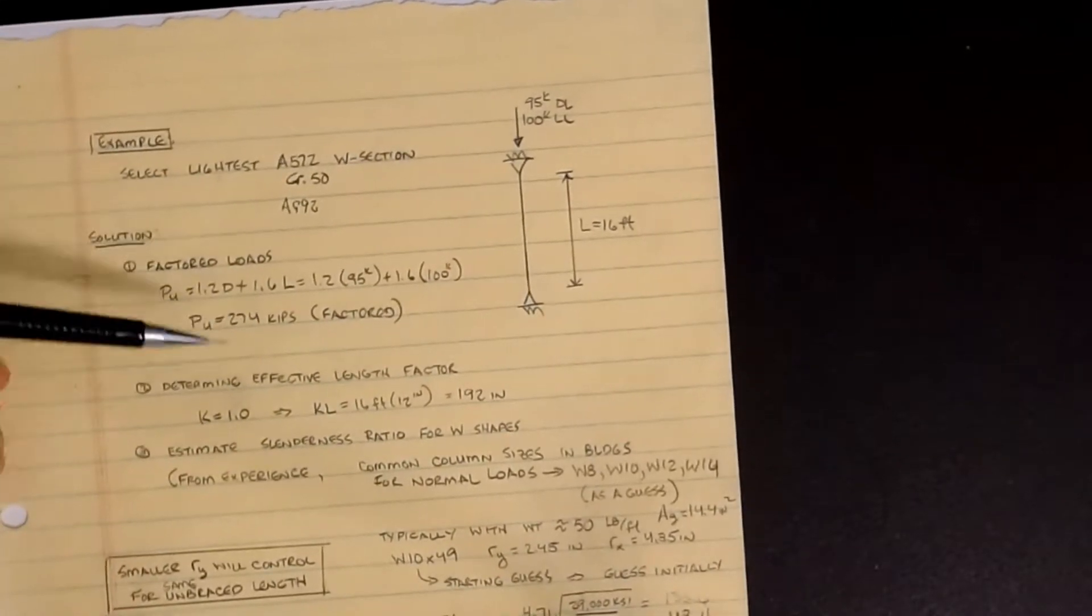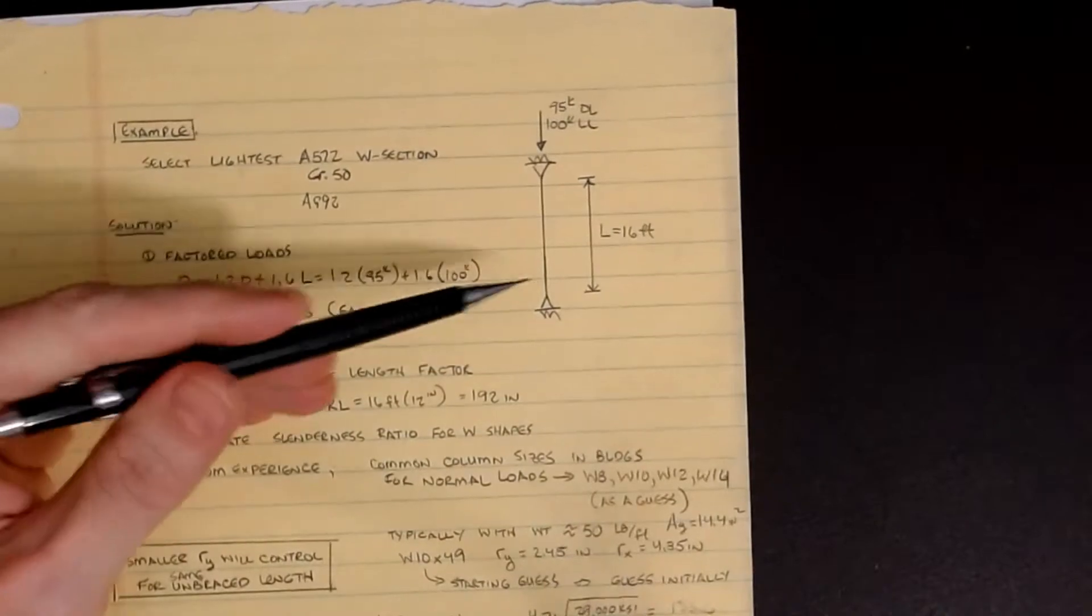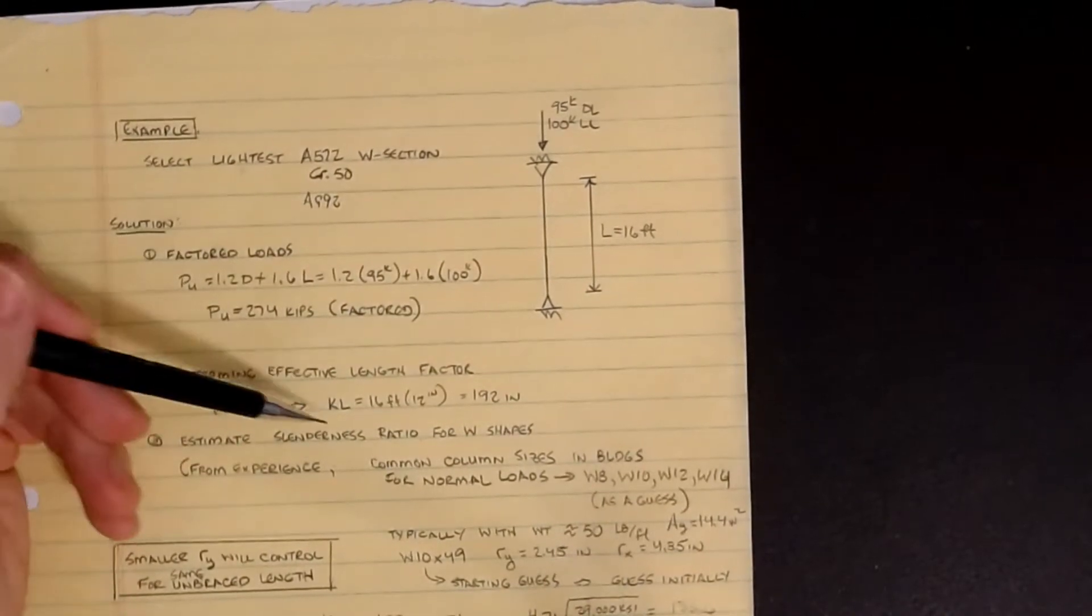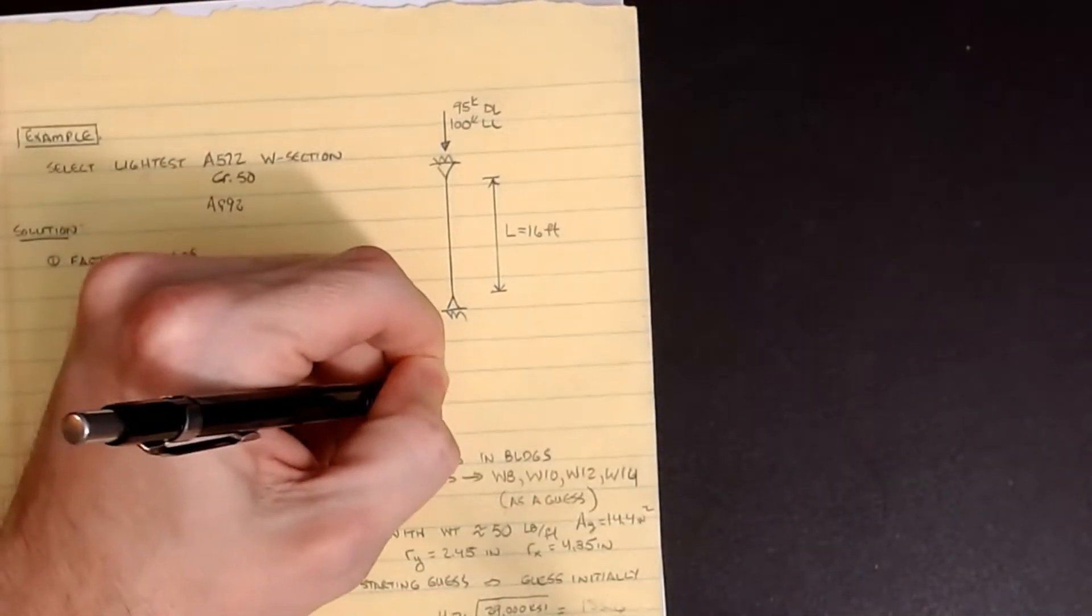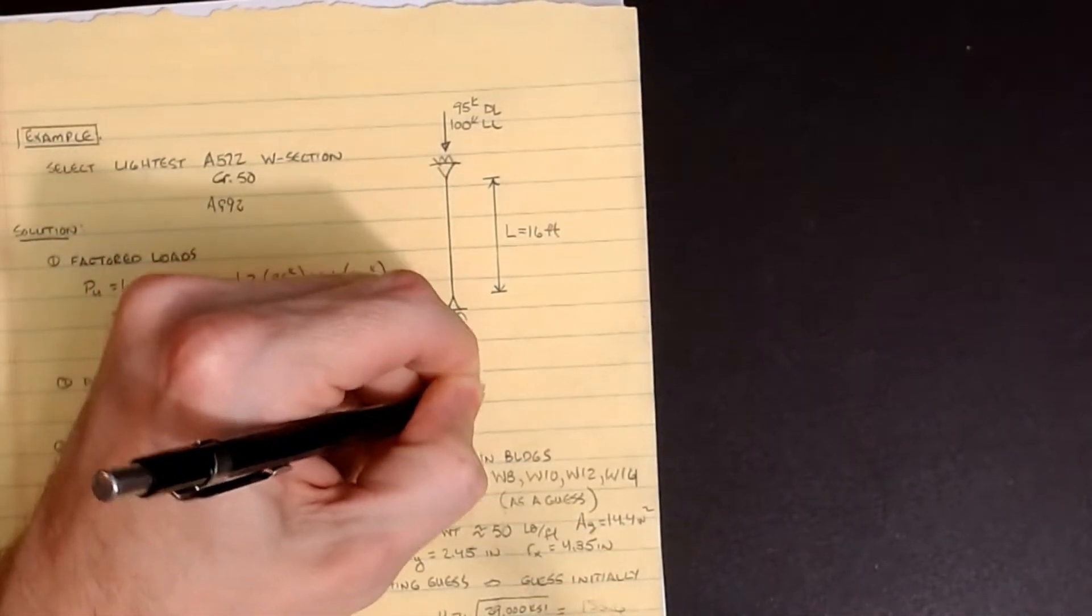We found that the factored load was 274 kips. It was a pin-pin connection so K was 1.0, so my KL ended up being 192 inches or 16 feet.